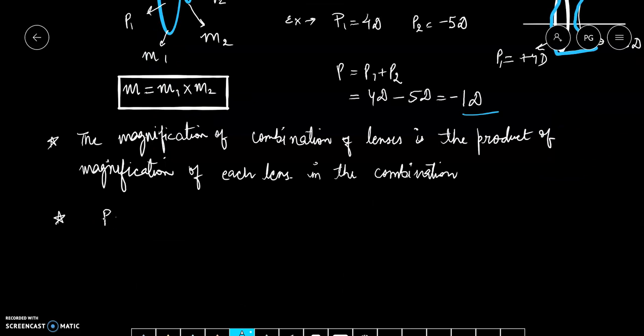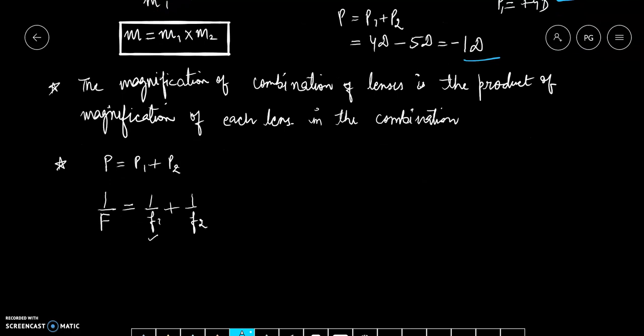Now there is one more point. P equals P1 plus P2, we know. The resultant lens will have focal length, let's suppose capital F. So 1 upon F will give me the power of the combination and it will be equal to 1 upon F1 plus 1 upon F2. Now let's suppose the first lens is a convex lens and second lens is concave lens. Then F2 value will be negative. And I can write 1 upon F equals 1 upon F1 minus 1 upon F2.